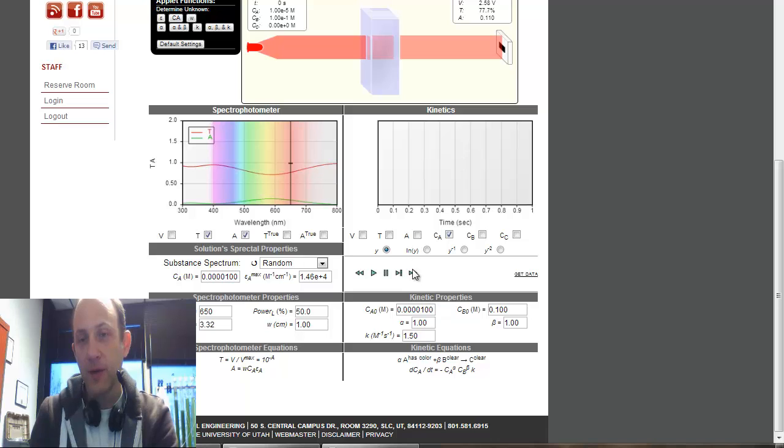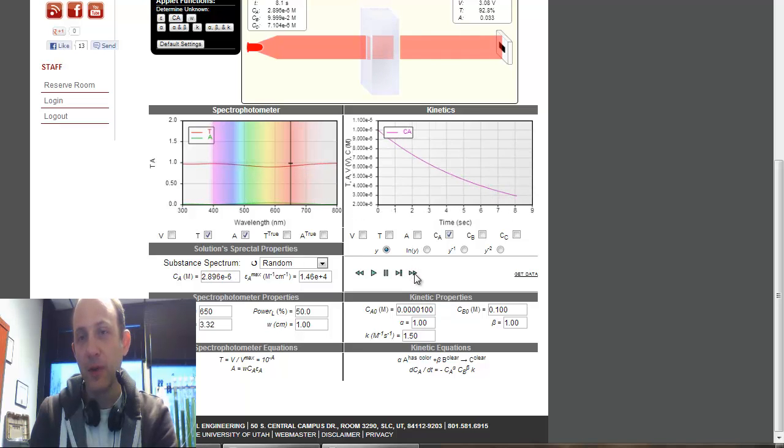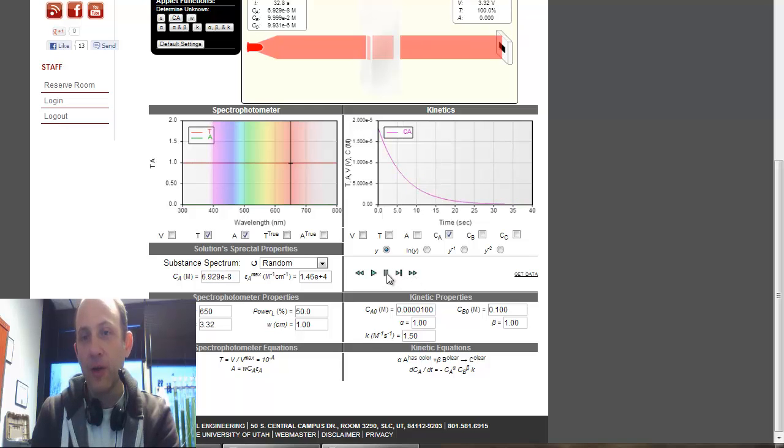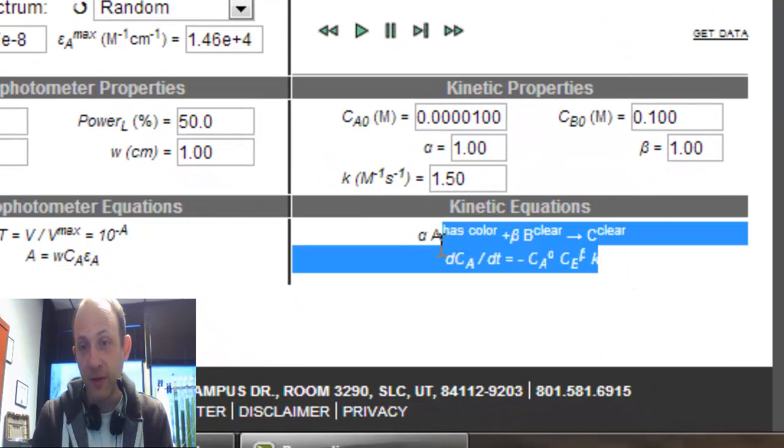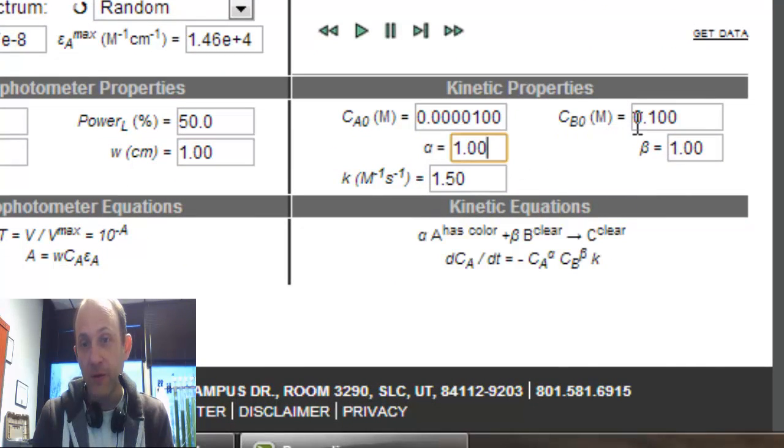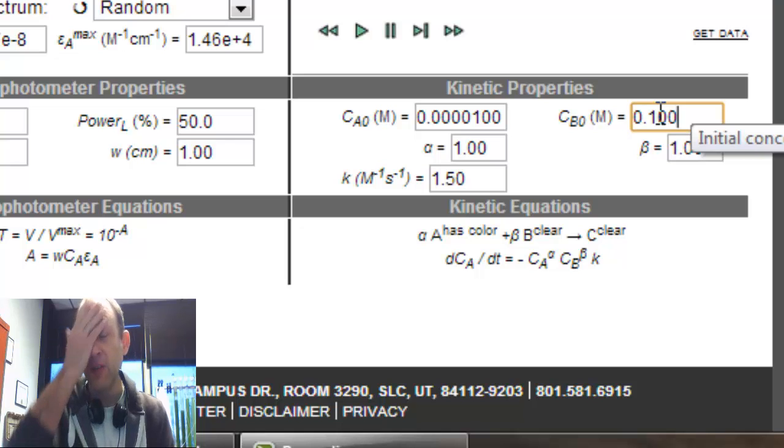So, if I run this right now, you'll see the concentration of A continually diminishes until it levels off. Now, I know everything in this case, everything that deals with these equations. I know alpha is one, beta is one, I have excess beta, or excess B, so it's as though B doesn't change over time. Or it does, but such a small percentage of it changes that it's inconsequential.